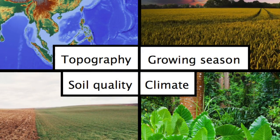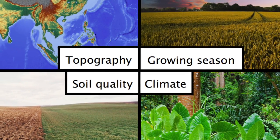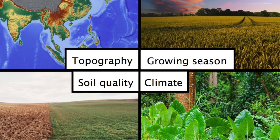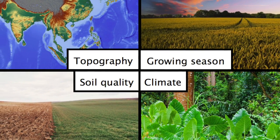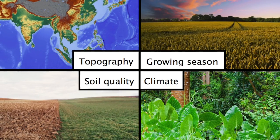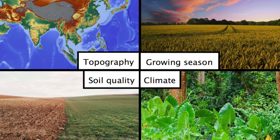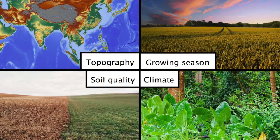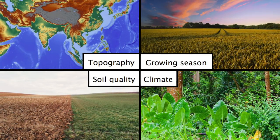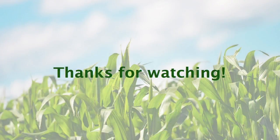All of these influences — climate, growing season, soil quality and topography — need to be taken into account when we try to increase crop yields. Clearly, this is a complex problem. The pressure to feed a ballooning population is mounting, but with our knowledge of crops and crop yield, we can find solutions. Thank you very much for watching.